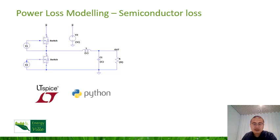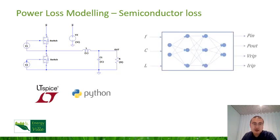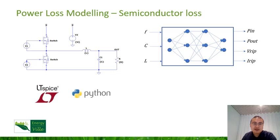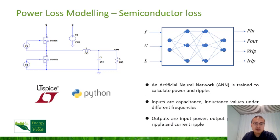However, SPICE simulation can typically take a large amount of time when the frequency is high. So to obtain a concise efficiency model and in the meantime accelerate the optimization procedure, the data from the SPICE simulation are used to train an artificial neural network. Here is the structure of the network. With the input of frequency, capacitance, and inductance values, the outputs are the average input power, output power, and also the current and voltage ripples.